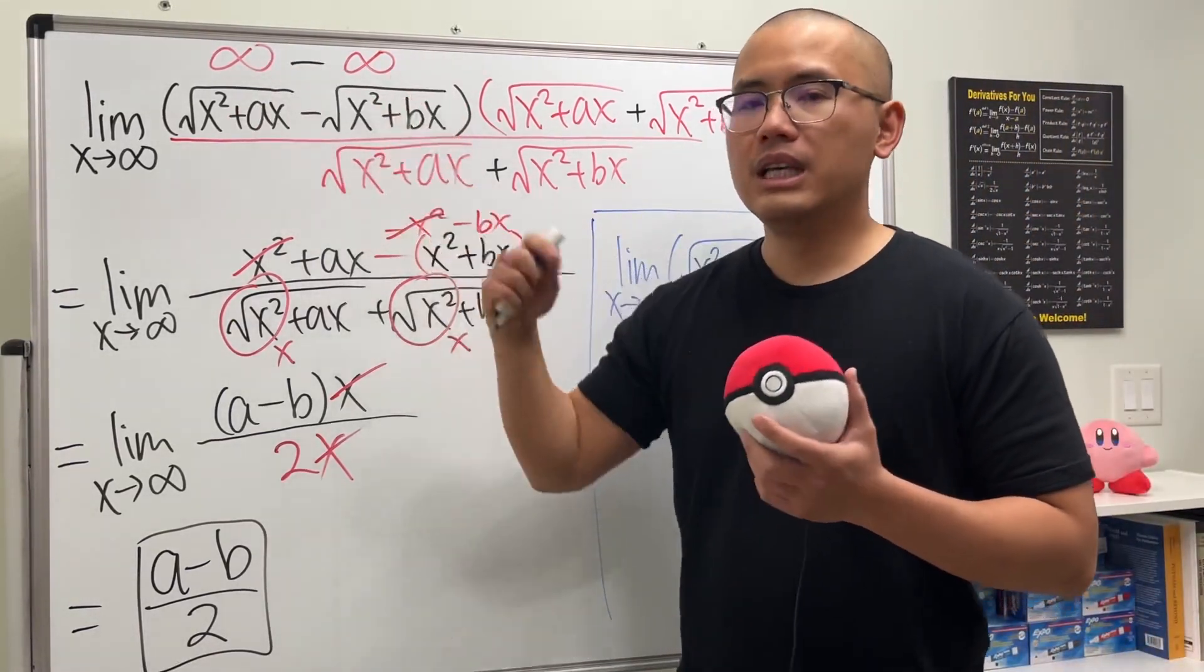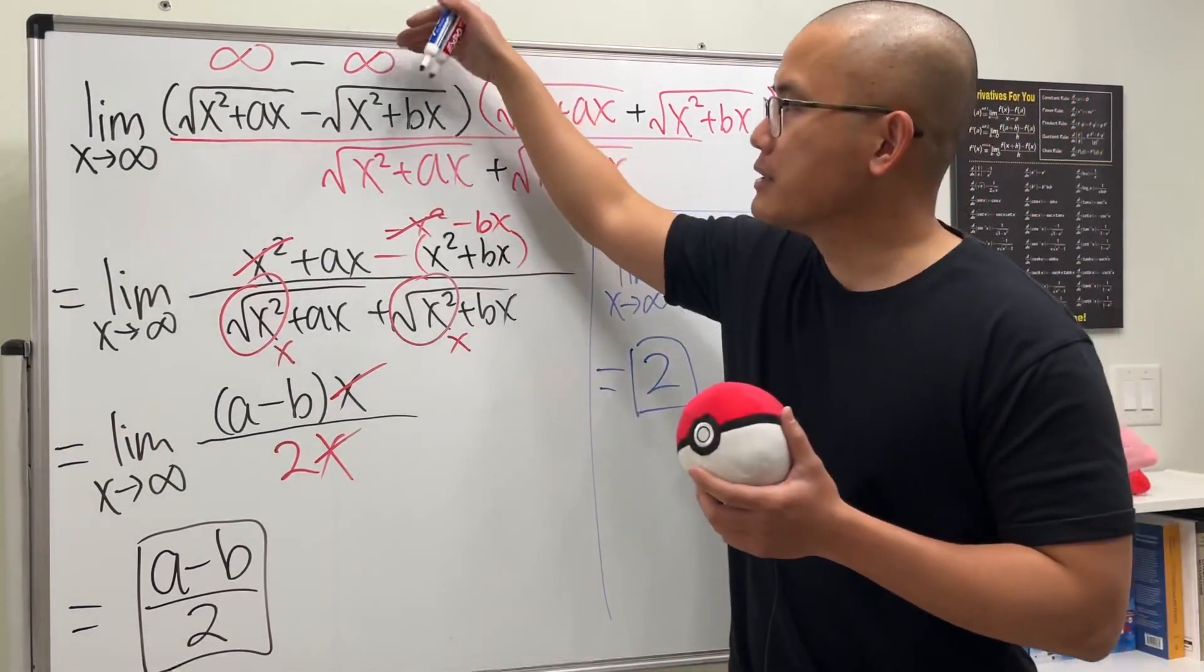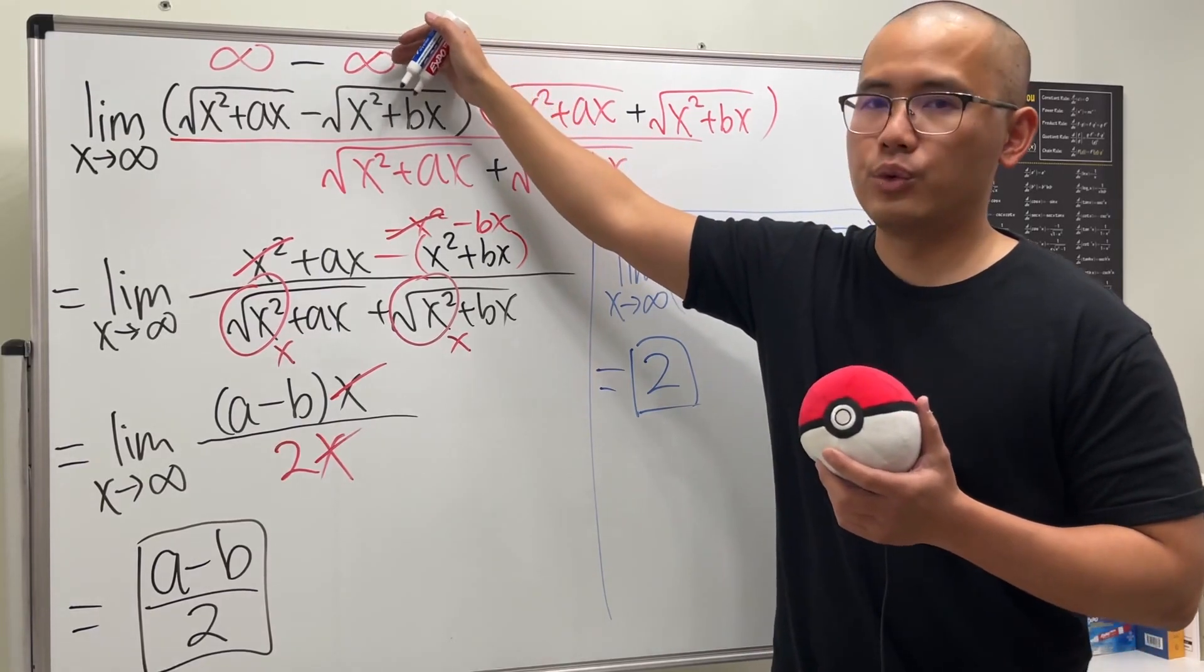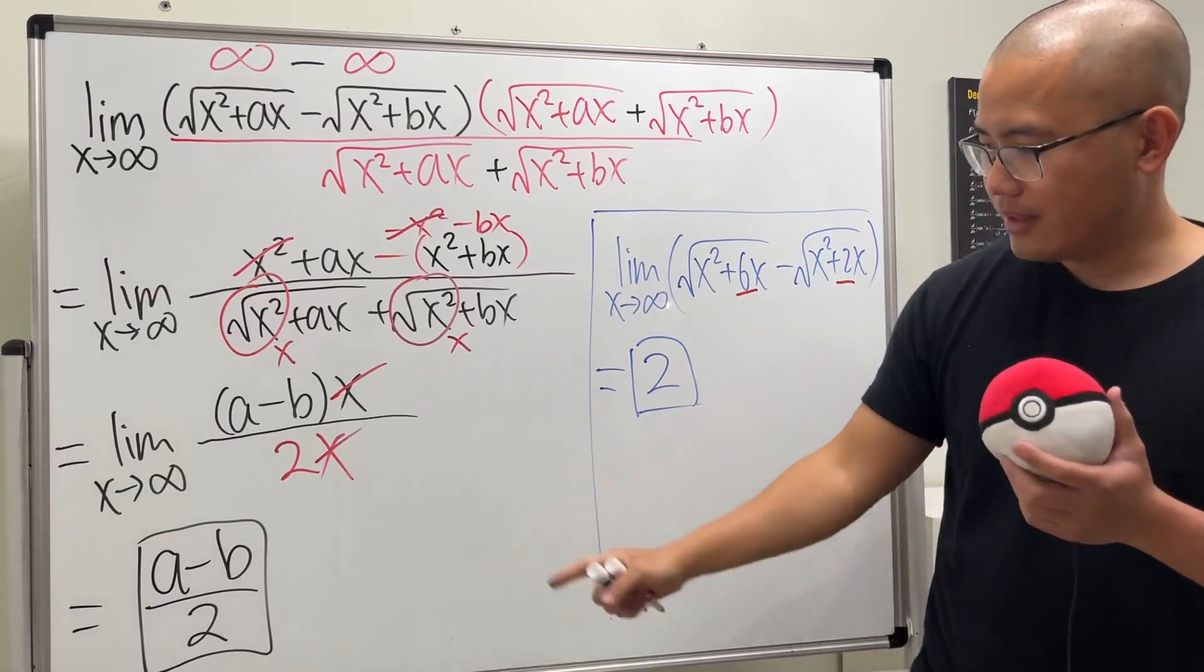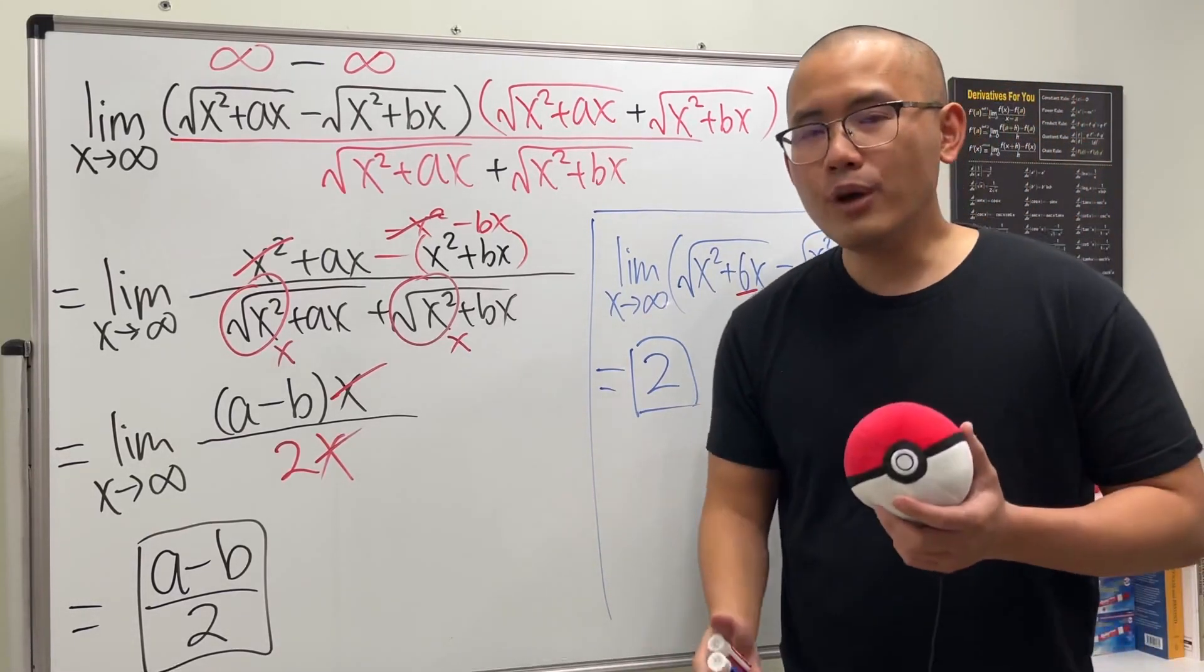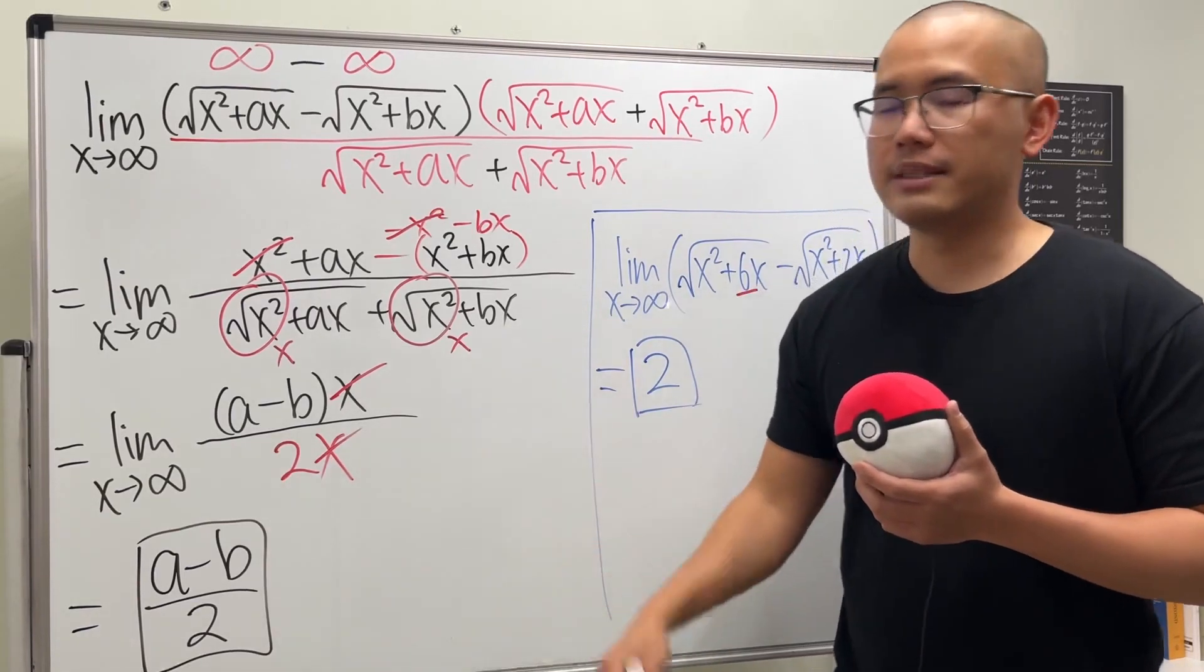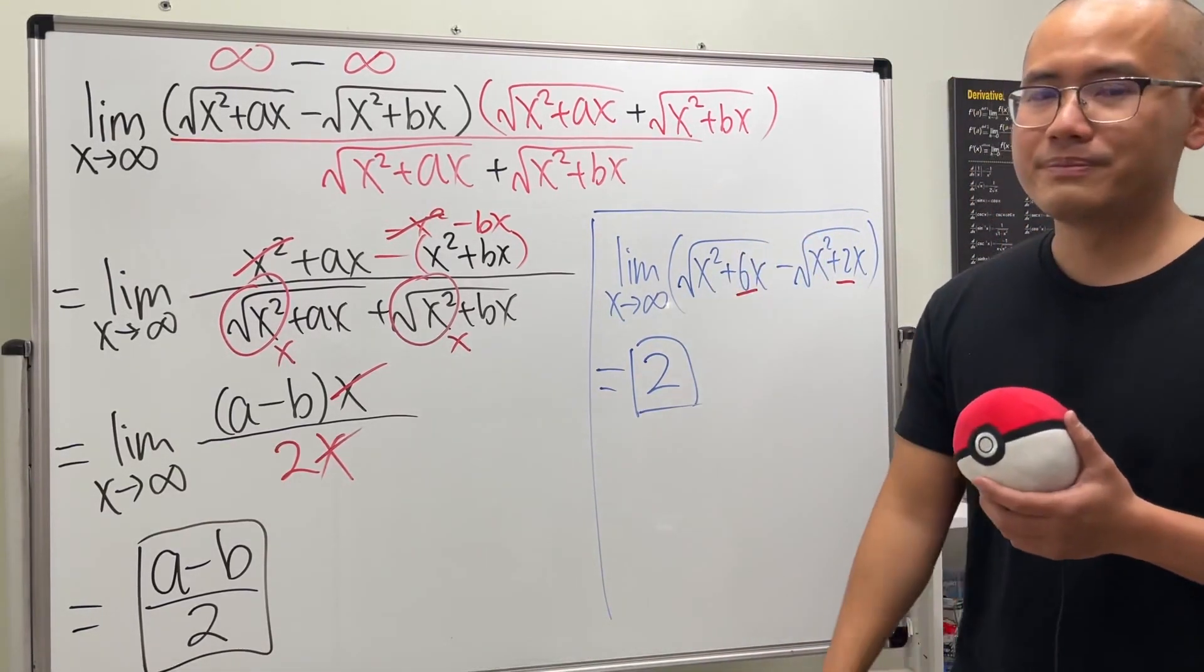And again, when we see infinity minus infinity, especially if you're just starting learning calculus, pay close attention to the indeterminate form. We cannot draw any conclusion when we see this—we must go through the computation like this one. If you need more help, check out my other videos. I have a lot more limit questions for you guys to help you with your Calculus 1 class. If you have any questions, leave them down below as well.